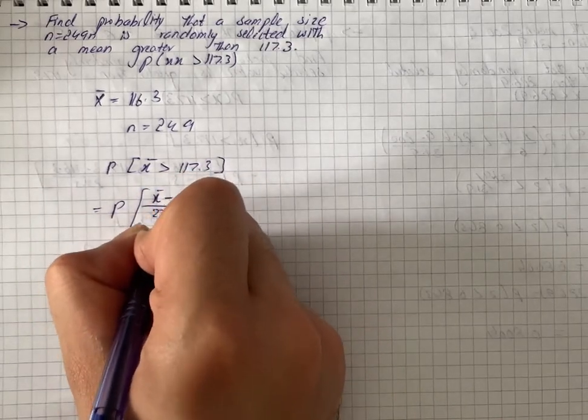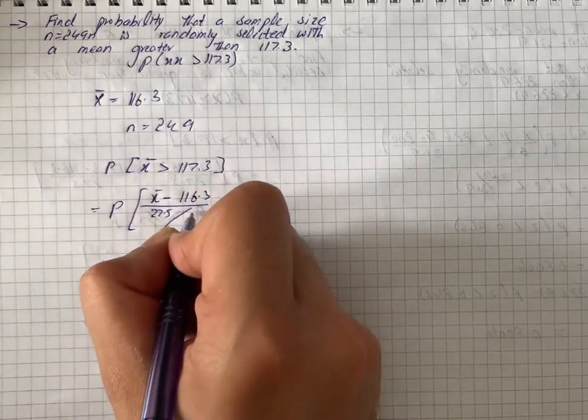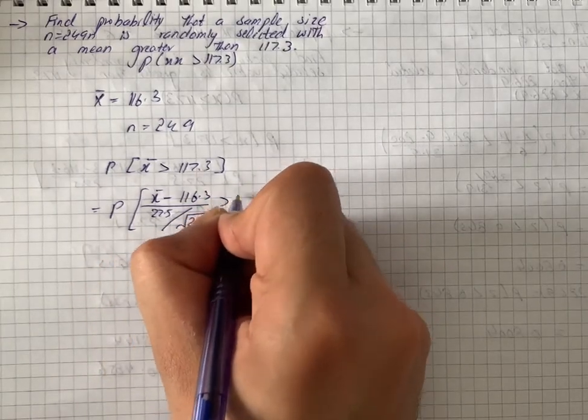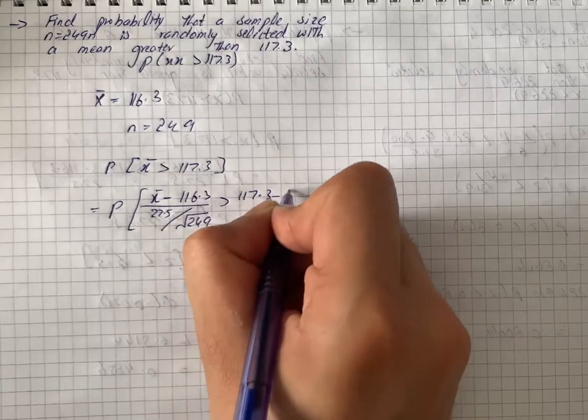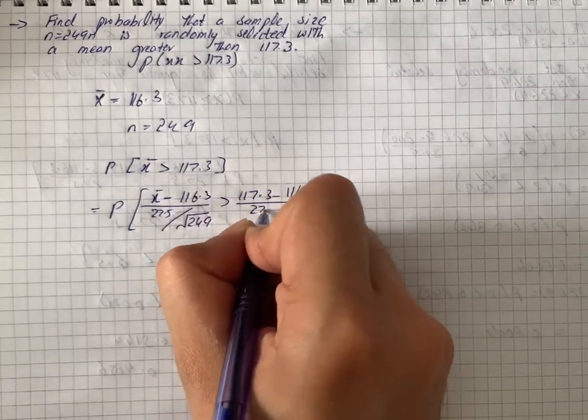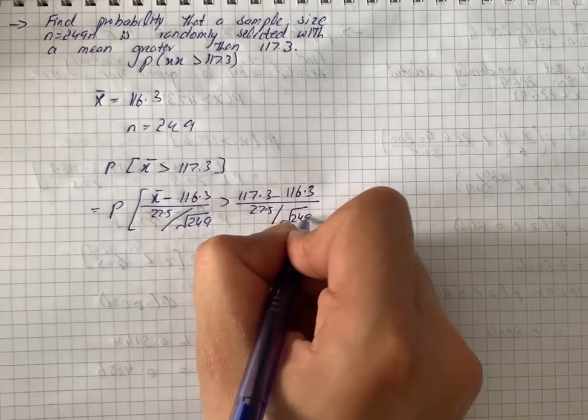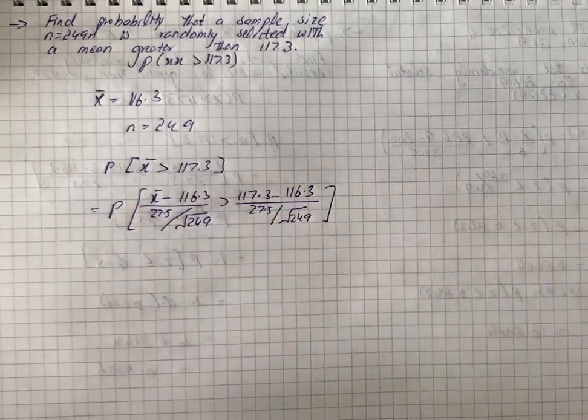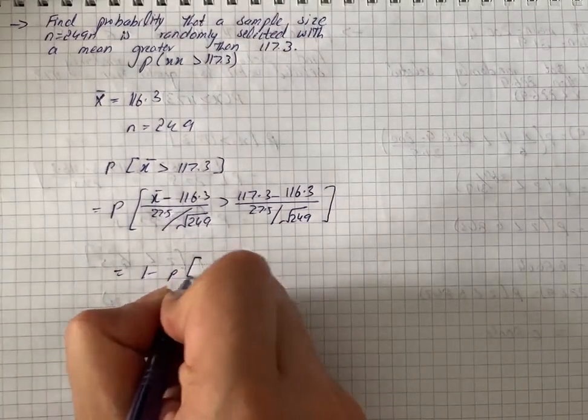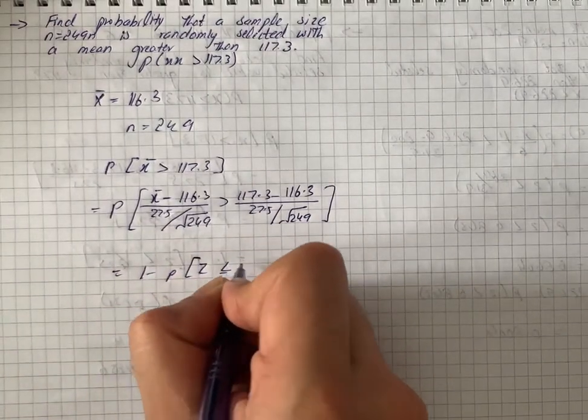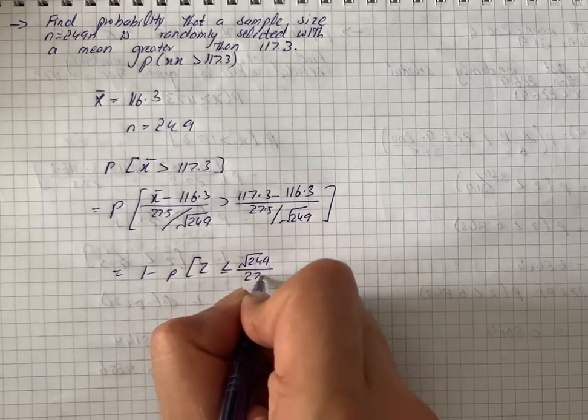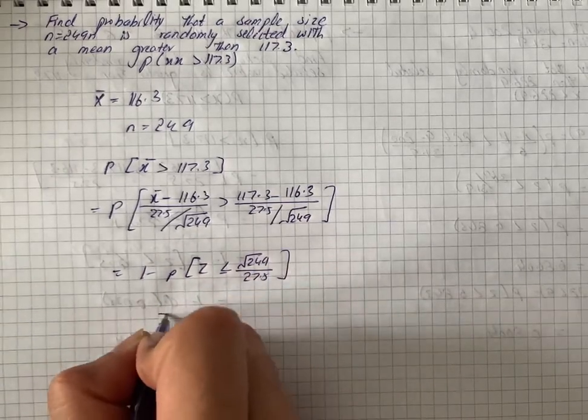So on simplification it gives us 1 minus P(z less than or equal to √249 divided by 27.5). We have 1 minus P(z ≤ 0.574)...